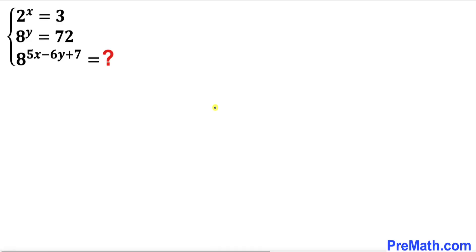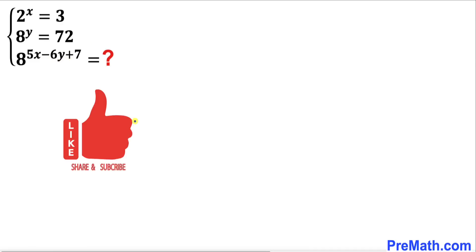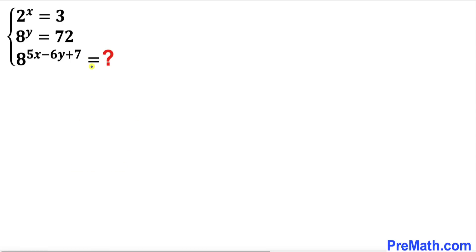Welcome to Pre-Math. In this video we have the system of equations: 2^x = 3 and 8^y = 72, and we are going to find the value of 8^(5x - 6y + 7). Please don't forget to give a thumbs up and subscribe. Let's go ahead and get started with the solution.